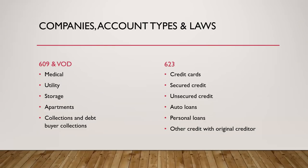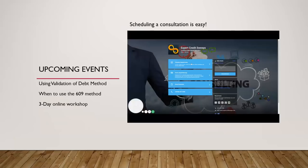So to separate them so you know which one to use: 609 and VOD are for medical, utility, storage, apartments, collections, and debt buyer collections. The 623 is for credit cards, secured and unsecured credit, auto loans, personal loans, and other credit with the original creditor. Collections versus original creditors — keep them separate. To the bureaus, keep it unique, keep it short. You're a real person, a regular Joe or Jane, just looking to get negative items off your credit.